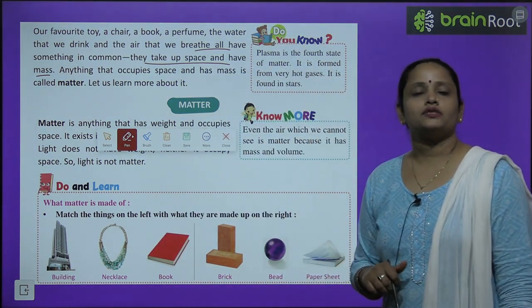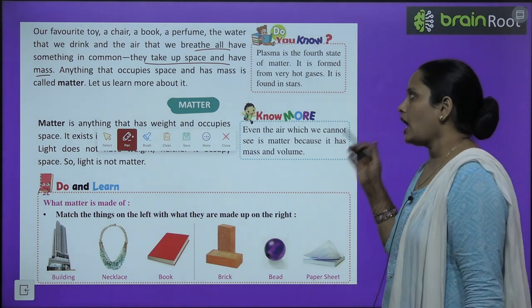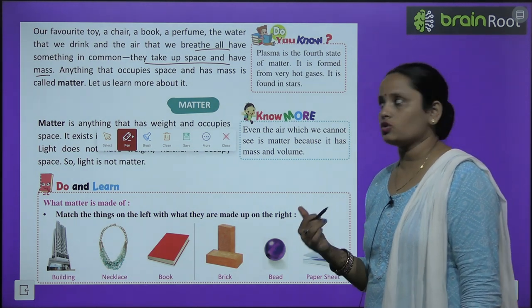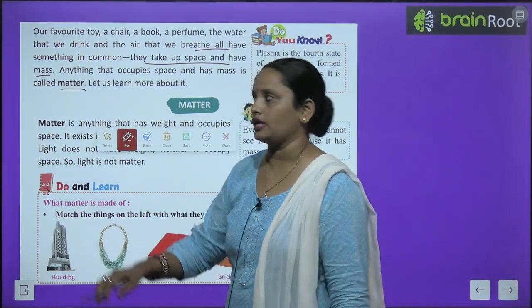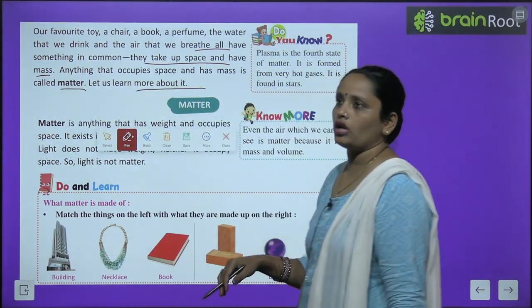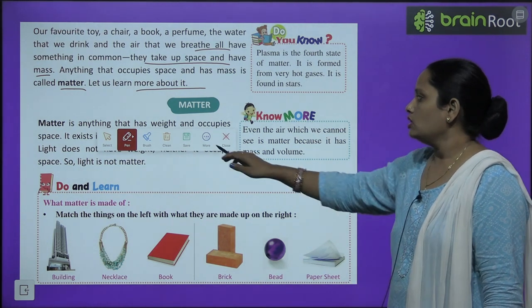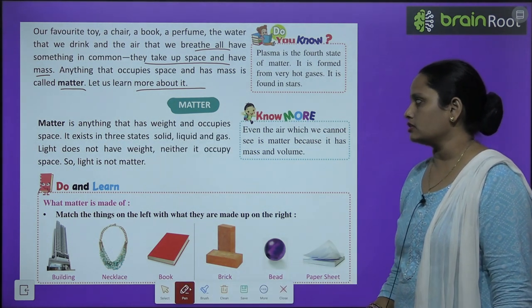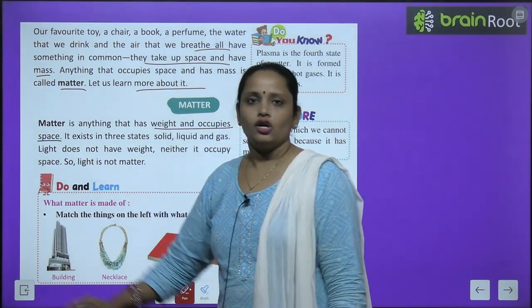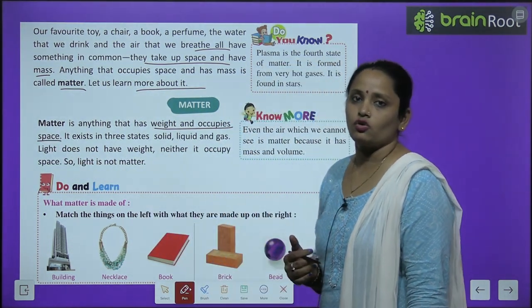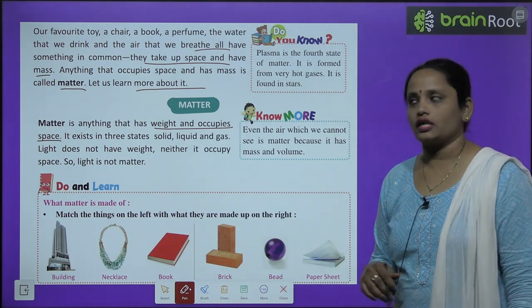Anything that occupies space — koi bhi cheez jo space ko occupy karti hai — and has mass — aur us mein mass hota hai — is called matter. Aisi cheez ko hum matter kehte hain. So matter is anything that has weight and occupies space. Koi aisi cheez jiska wazan ho aur woh jagah leti ho, aisi cheez ko hum matter kehte hain.